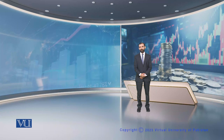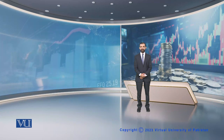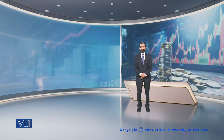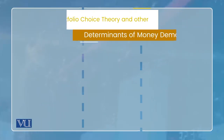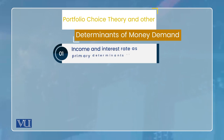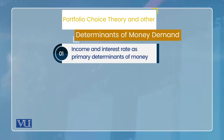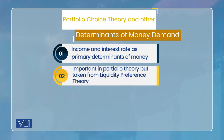In the last lecture, we started portfolio theory of money demand, and now in this lecture we will try to complete this portfolio theory. We have already discussed that there are two fundamental determinants of money demand: income and interest rate. These two determinants are also taken in liquidity preference theory, so up to this point both theories have common determinants for money demand.